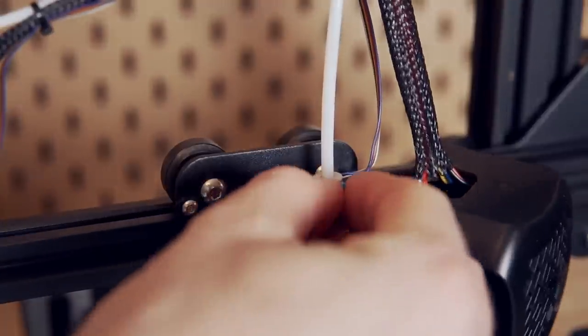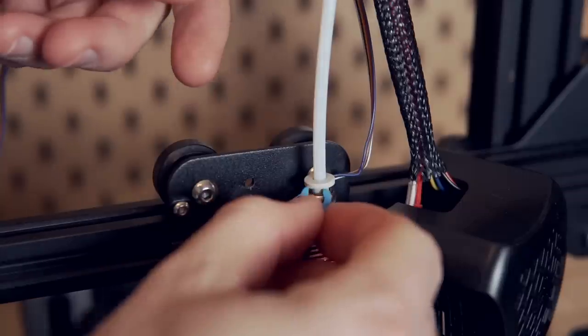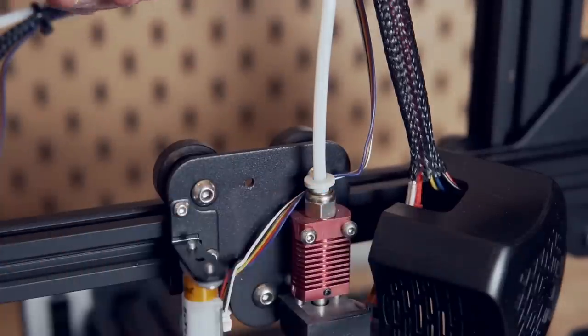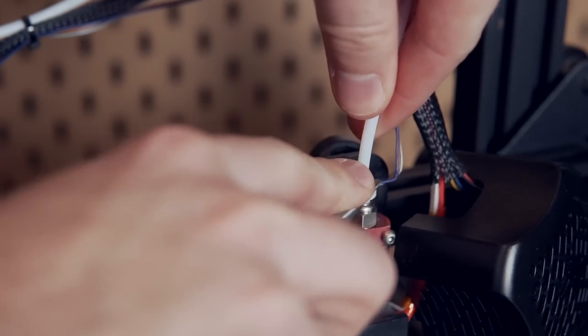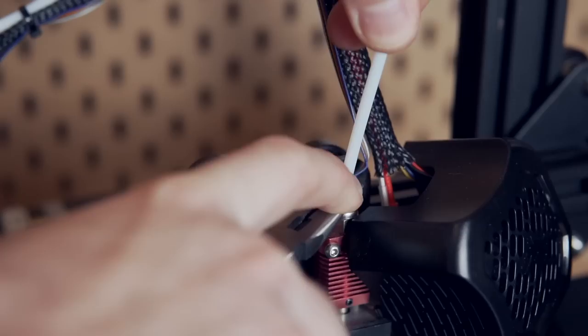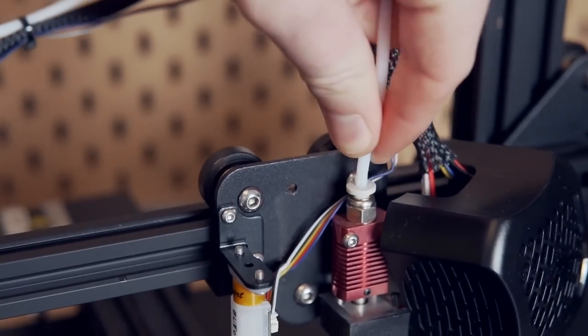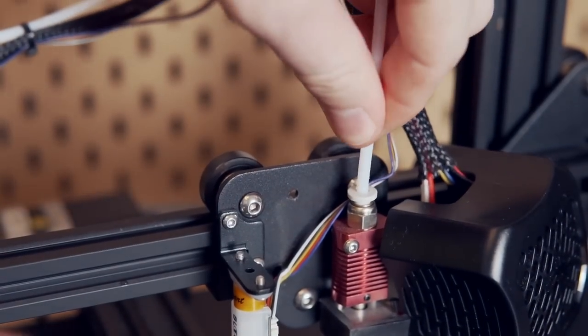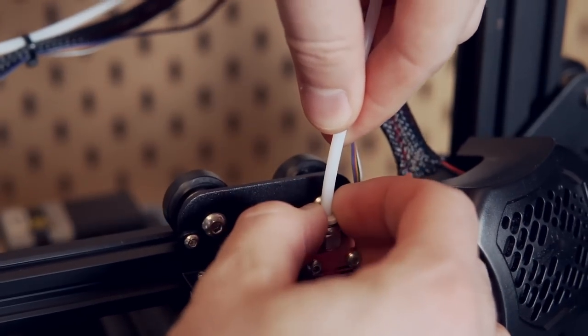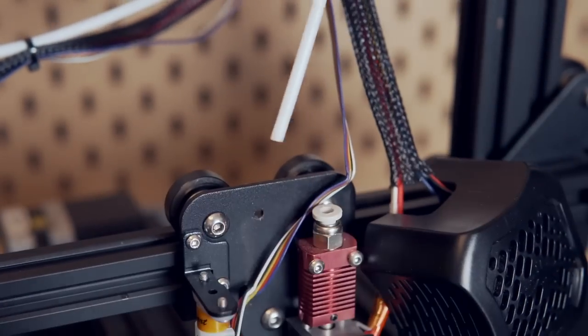Next we'll remove the blue retention clip. This can just be done by using your thumb and pulling it off, and then we'll need to remove the bowden tube. Mine was pretty stuck. Normally you just press down on the round retention clip while pulling up. I had to use some needle nose pliers to convince it. If you're not able to press down that ring to release the bowden tube, you might also want to use a tool to help you out.